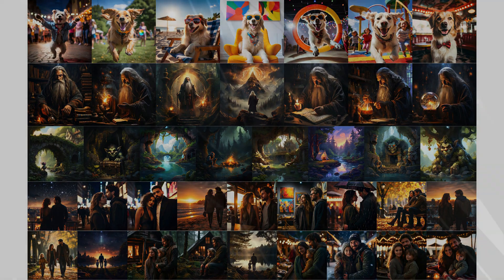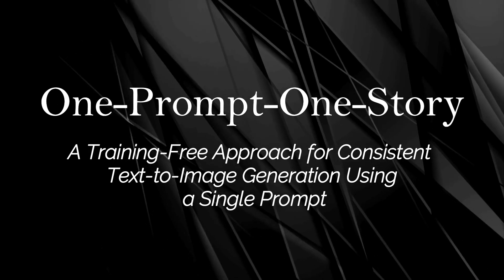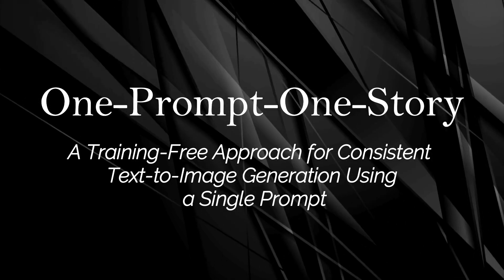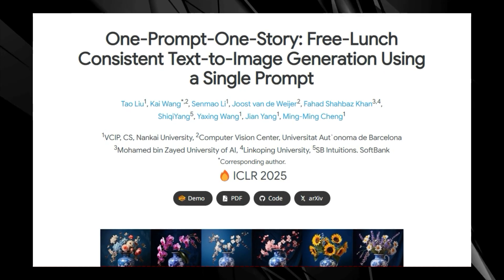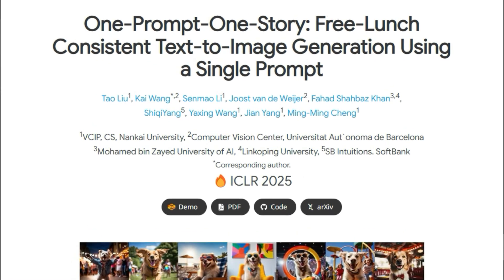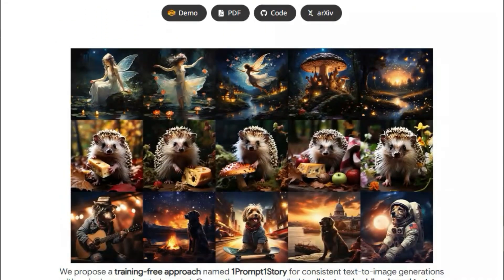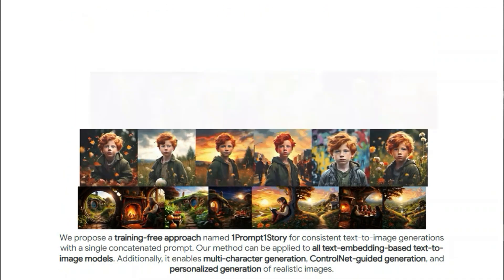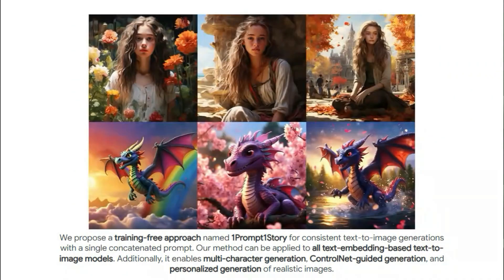So grab your coffee and let's jump right in. Paper number 1: One Prompt One Story, a training-free approach for consistent text-to-image generation using a single prompt. We're breaking down a really cool paper that addresses a tricky problem in text-to-image generation — keeping characters consistent across multiple images, which is crucial for storytelling. The paper is titled One Prompt One Story: free lunch consistent text-to-image generation using a single prompt, and it introduces a unique approach to solve this.